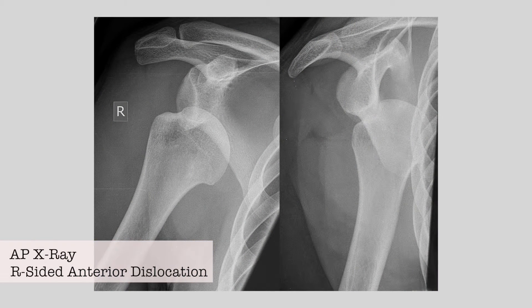X-ray imaging can confirm the clinical picture. It's important to remember that for shoulder dislocations, three X-ray views are required: AP, lateral, and modified axillary, as this will ensure that posterior dislocations aren't missed.